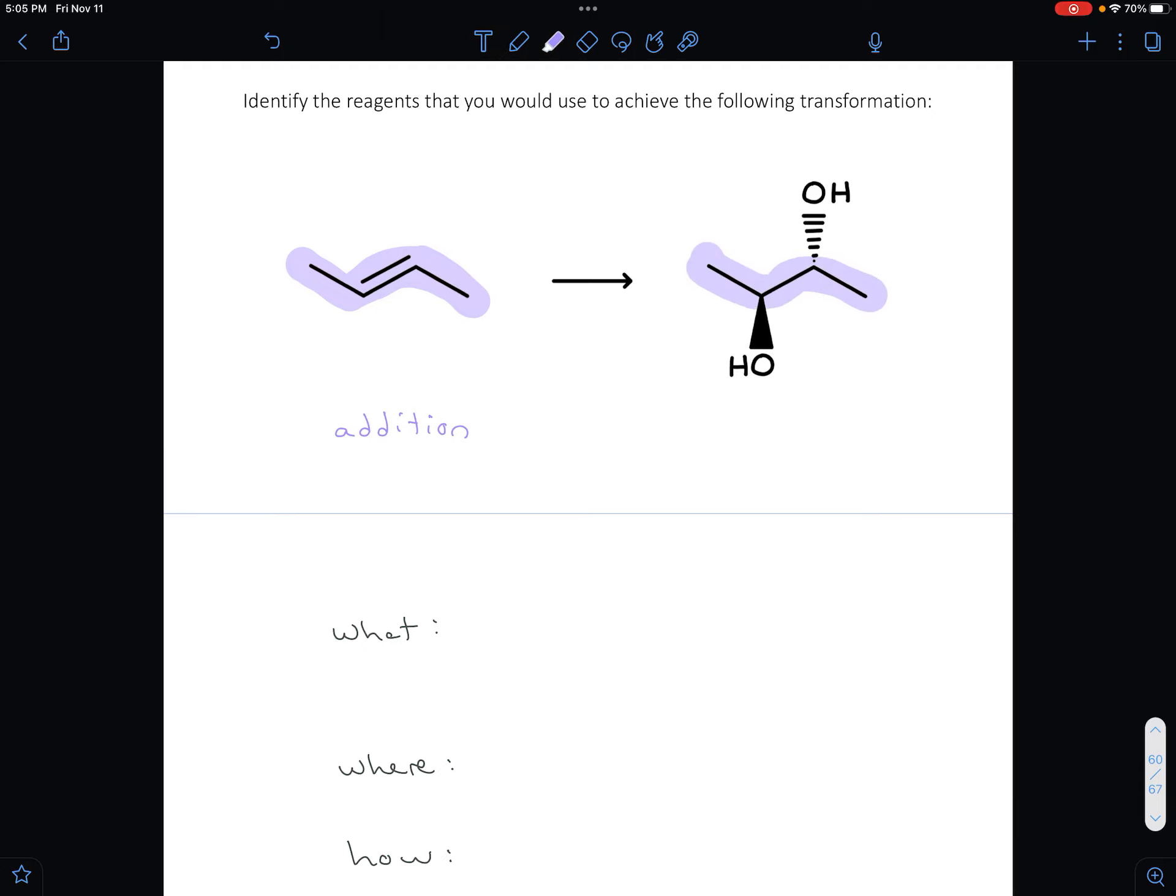When you compare the carbon chain in the reactants with the carbon chain in the products, you can clearly see two things are on the products that were not in the reactants. You've added two OHs.